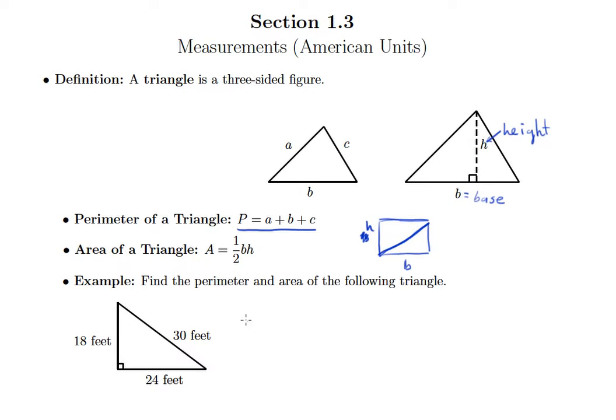And so we'll apply this to this following example. So it says find the perimeter and area of the following triangle. Okay, so first of all, perimeter. Remember perimeter, we're just simply going to add up all of those sides. So we have 18 plus 24 plus 30. And when I add up all of those sides, what I end up getting is 72 feet. So there's our perimeter.